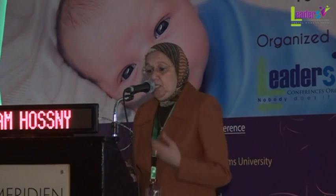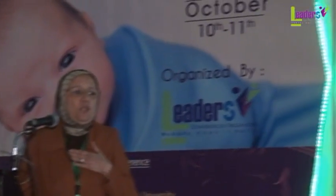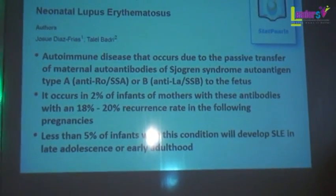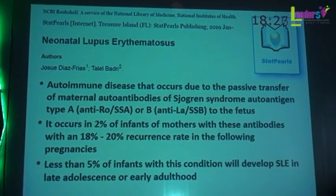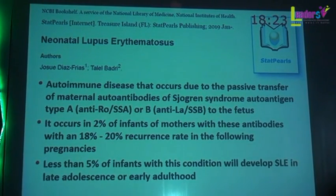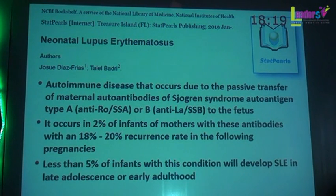I'm going to go through the definition, the usual clinical manifestations, and more importantly, the unusual clinical manifestations, diagnostic tools, approach to management, and key notes at the end. Neonatal lupus is an autoimmune disease that occurs due to passive transfer of maternal autoantibodies — anti-Ro (SSA) and anti-La (SSB). Although named after Sjögren's syndrome, because that's where they were first described, these antibodies are not exclusive to Sjögren's; they can occur in many other autoimmune diseases.